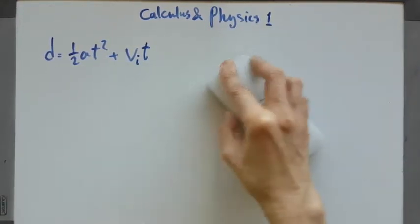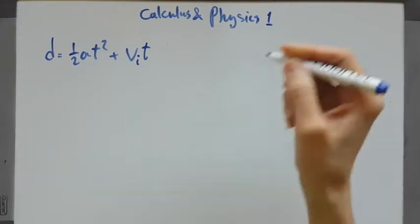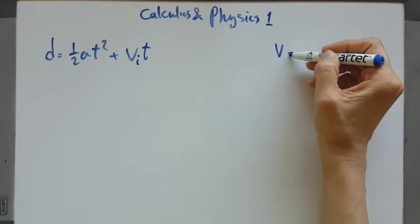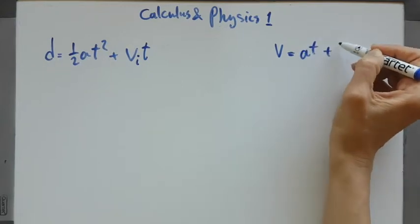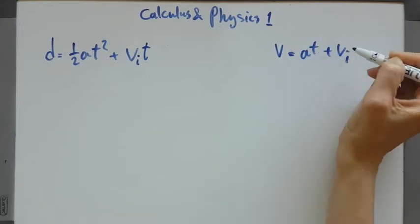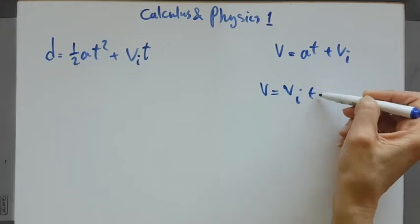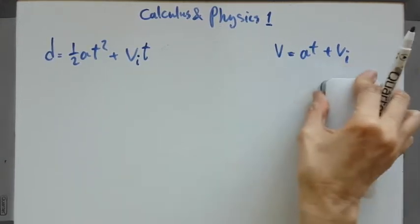And you know that velocity is actually AT plus VI — or in some books VI plus AT — exactly the same thing, doesn't matter.